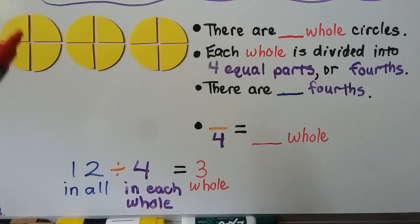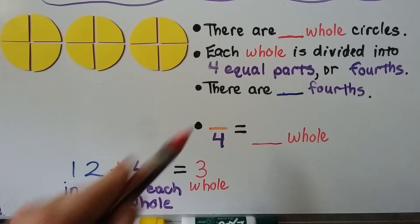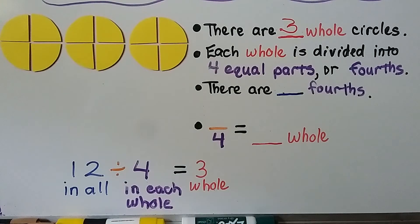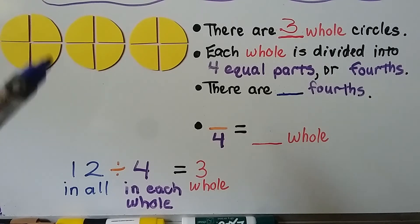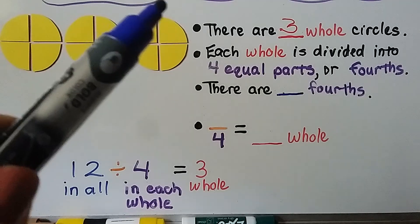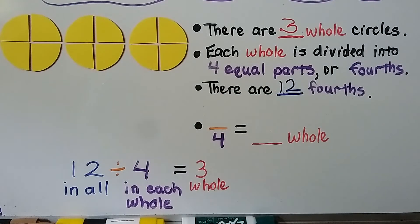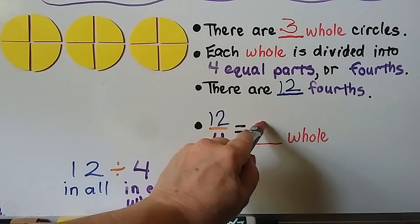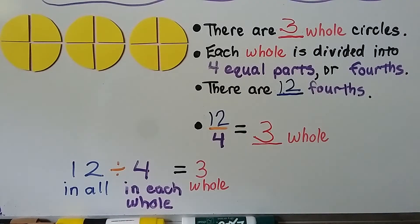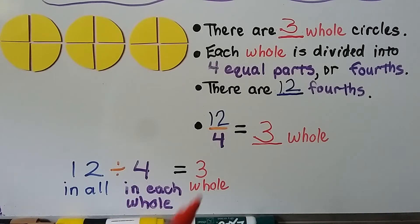For this one we have one, two, three whole circles. Each whole is divided into four equal parts, or fourths. And there are four, five, six, seven, eight, nine, ten, eleven, twelve-fourths. We write the fraction as twelve-fourths. Twelve-fourths is equal to one, two, three whole circles. If we have twelve in all and there's four in each whole circle, then we have three whole circles.